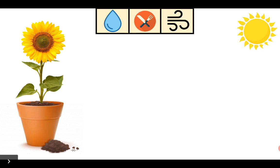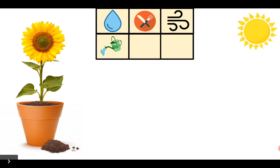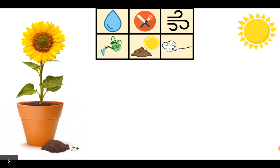So, plants need water. Plants need food, which is sunlight and soil. And plants need air. Because they are living things. Is a plant a living or a non-living thing? It's a living thing. Well done.